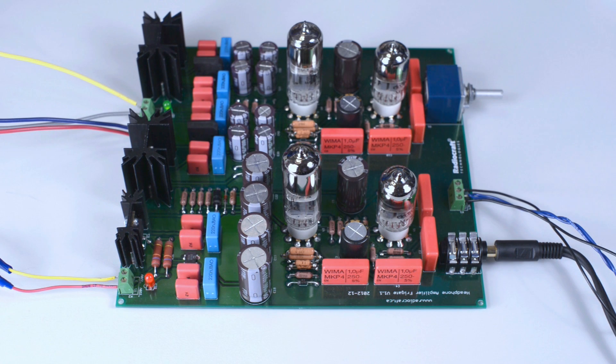Frigate uses two tubes per channel. The tubes are 6922 and 6H30PI. Both tubes are manufactured by Electro-Harmonix.